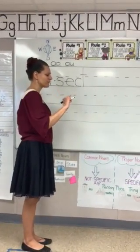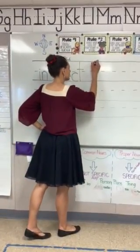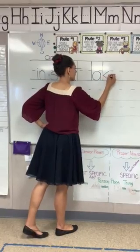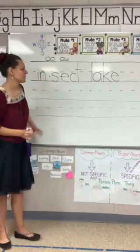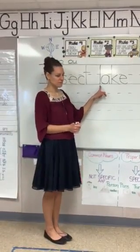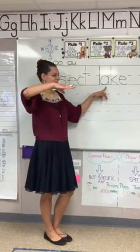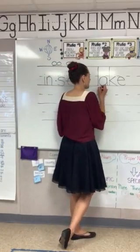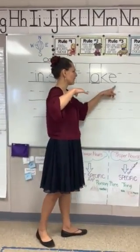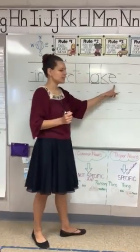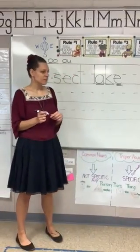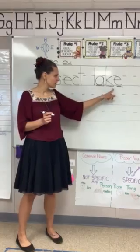Alright, put your finger under the first phonogram in lake. Tell me what I need to write to spell it. Good, make sure yours looks like mine. Alright, let's mark it. Does this need a marking? How about this? Good, we underline our long A because it's saying its name. We always underline the consonant that goes between our vowel and our silent final E, job one. And we double underline our silent final E, job one. Let's say the sounds and put them together.